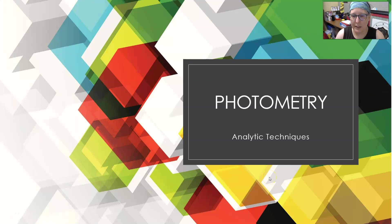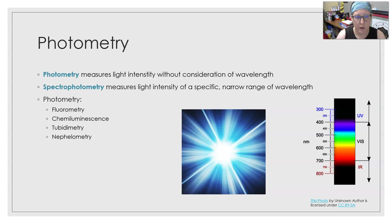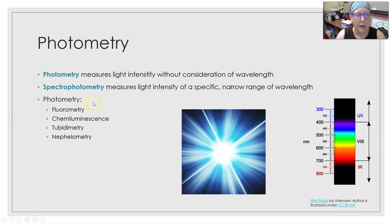Hi everybody, this is Dr. A. For our second video on analytic techniques, we're going to look at photometry. Photometry measures light intensity without consideration of wavelength. We covered spectral photometry in a previous video, where spectral photometry measures light intensity of a specific narrow range of wavelength. Some of the applications of photometry are going to be in fluorometry, chemiluminescence, turbidimetry, and nephilometry, and we're going to look at each of those.